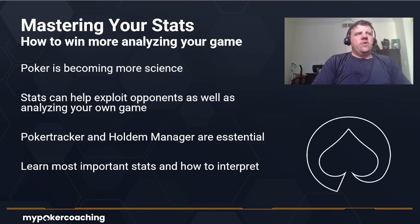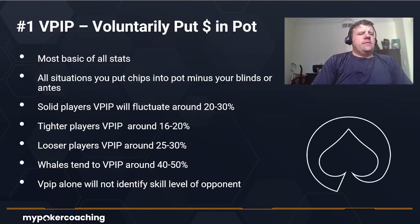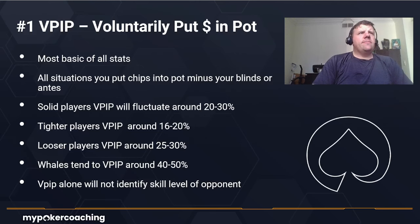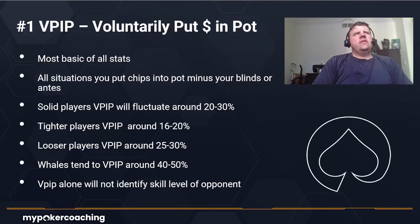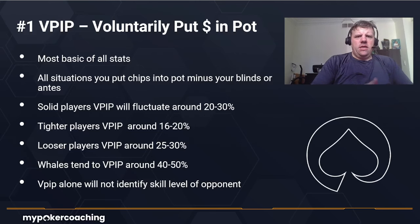Today we're going to talk about the most important stats to begin with — some basic stats and how to interpret them. We'll start with preflop stats. In my opinion, preflop is the most important street in all of poker because it happens most frequently. The first four or five stats are preflop stats. Stat number one is VPIP — Voluntarily Put Money Into the Pot — one of the most basic of all stats. It includes all situations where you can put chips into the pot, minus your blinds or antes, which are forced bets.